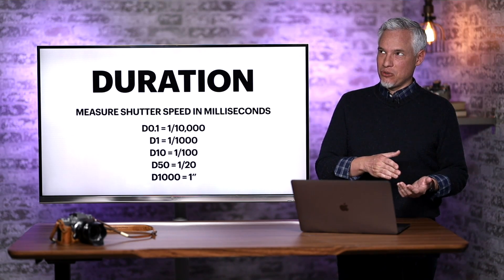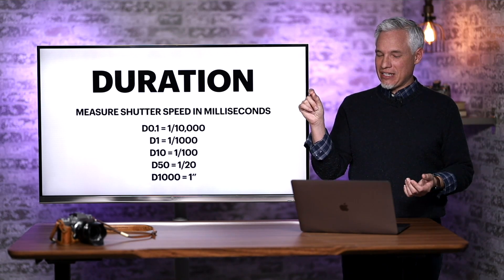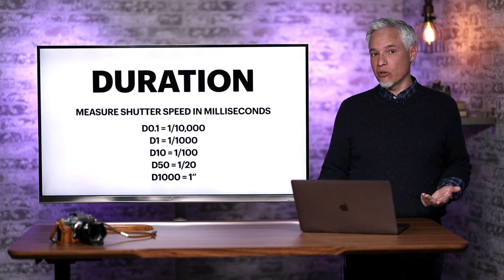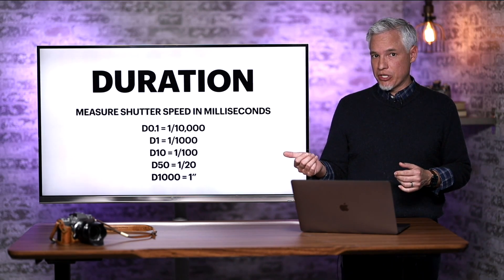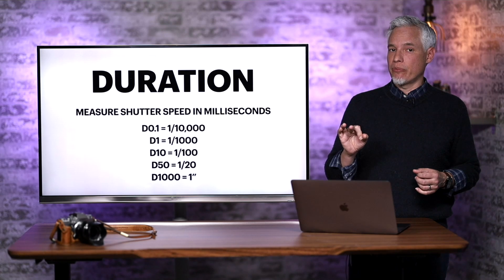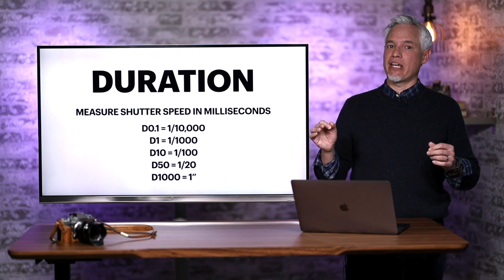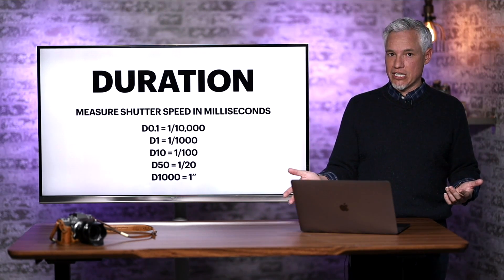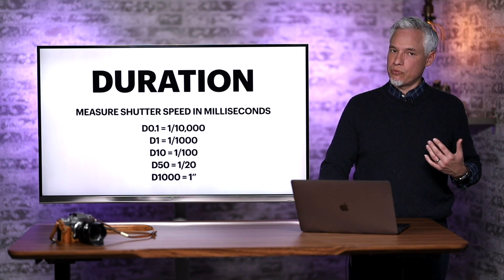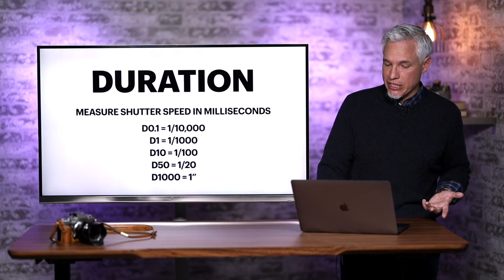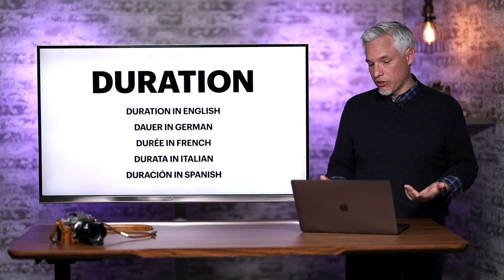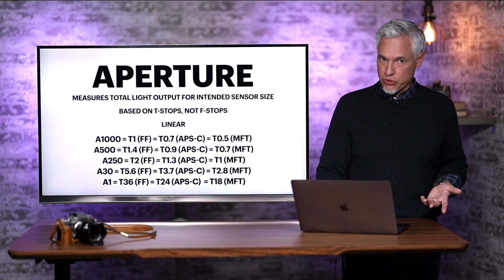I would have liked to have used one tenth of a millisecond, except the millisecond is a unit of time that people are already familiar with. Notice that this unit of measurement uses the letter D followed by the number. This helps separate it from the other camera settings, so we don't have to say 'your shutter speed is 50' — we can simply say 'I'm at D50.' I chose the term duration because the initial D works in just about all of the languages that I looked up, so it should be easier to teach in other countries.